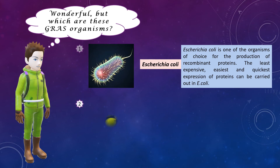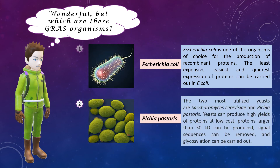Next we have certain yeasts like Pichia pastoris. The two most importantly used yeasts are Saccharomyces cerevisiae and Pichia pastoris. These yeasts can produce high yields of protein at low cost; proteins larger than 50 kilodaltons can be produced, signal sequences can be removed, and glycosylation can be carried out in these yeasts.